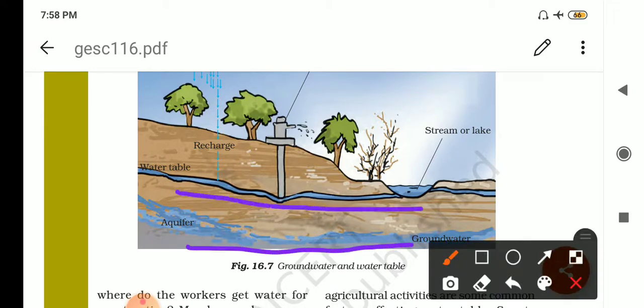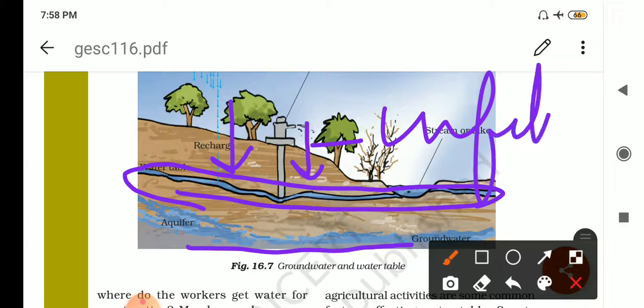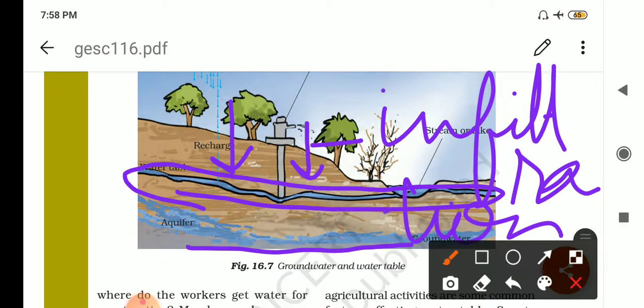You can see here, this is the water table, groundwater or the underground water. And the process of seeping of the water under the ground is called infiltration. The water which is going inside the soil, this process is called infiltration.